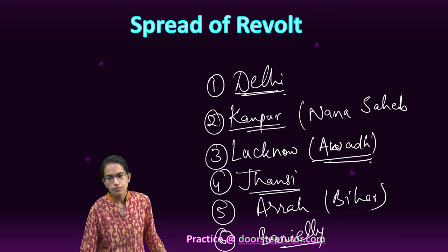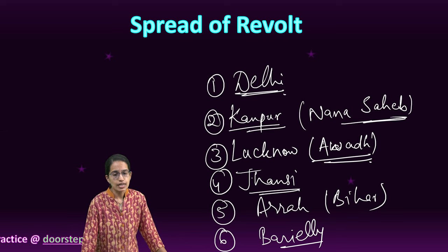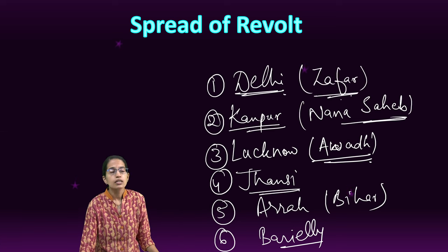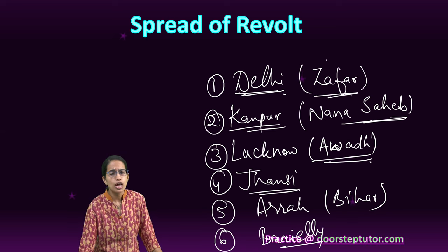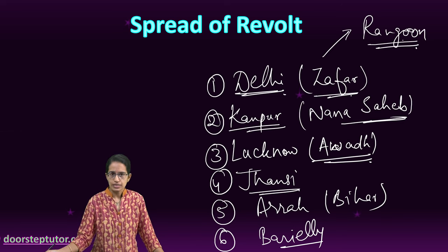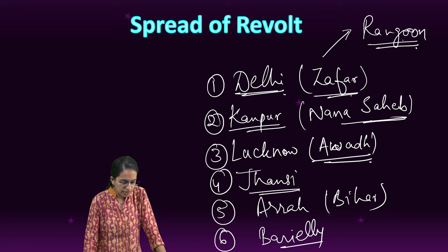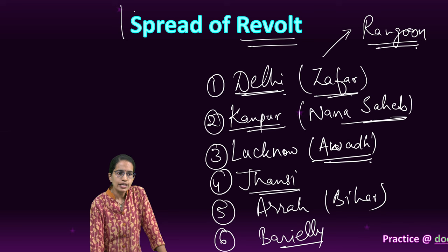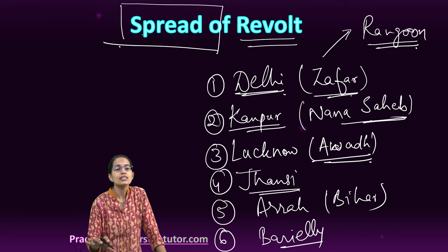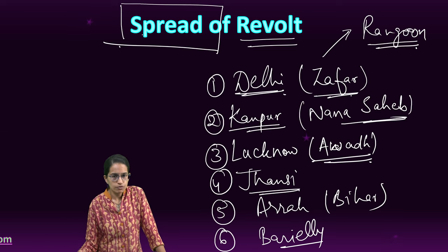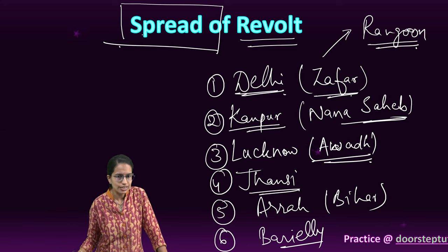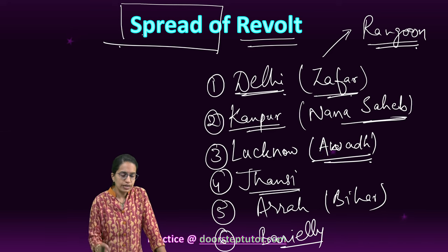Nana Sahib in Kanpur was not allowed pension, and a mutiny started from Barrackpore. In Delhi, Bahadur Shah Zafar was not given his title, and ultimately he was exiled to Rangoon, presently known as Yangon. This marked the end of the Mughal Empire's rule in India and the establishment of British paramountcy. Governor Generals were now called Viceroys, and all those who rebelled were hanged to death.